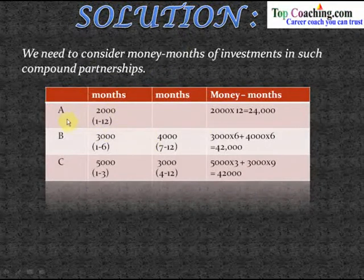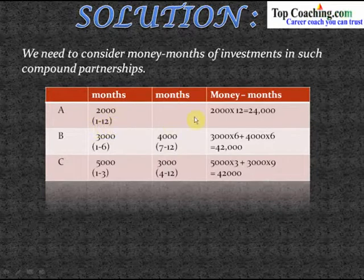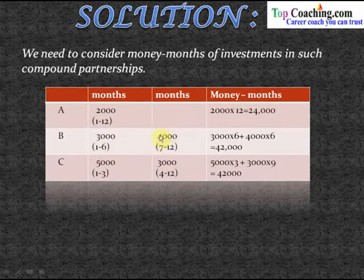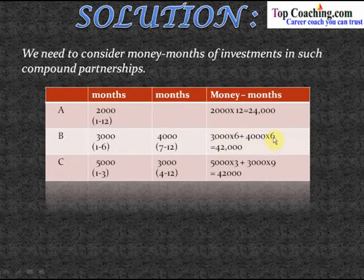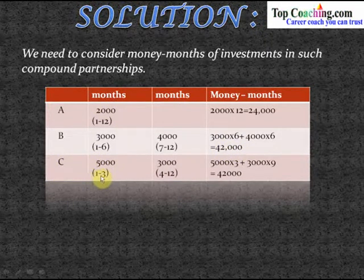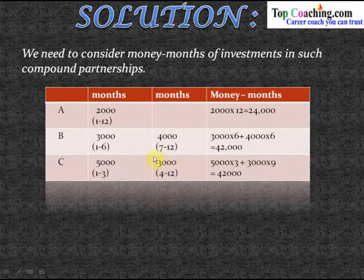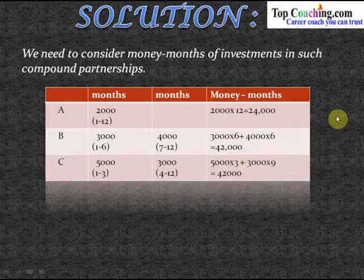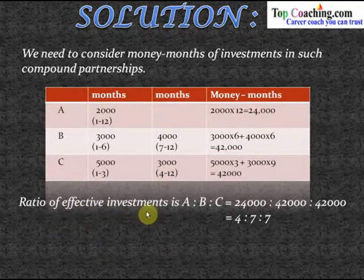Looking at the table: A invests rupees two thousand for twelve months, so money-months equal two thousand multiplied by twelve, which is twenty-four thousand. B invests rupees three thousand for the first six months and rupees four thousand for the remaining six months, so money-months equal three thousand multiplied by six plus four thousand multiplied by six, totaling forty-two thousand. C invests rupees five thousand for three months and rupees three thousand for the remaining nine months, giving five thousand multiplied by three plus three thousand multiplied by nine, which also equals forty-two thousand.